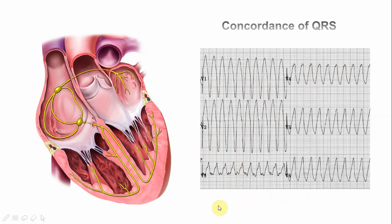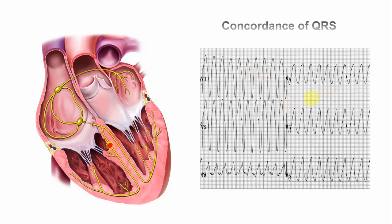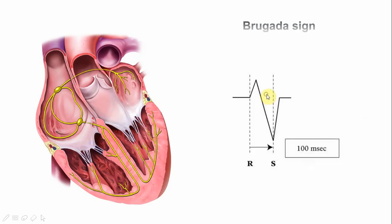Concordance is a very important concept. Concordance of the QRS complexes across the chest leads V1–V6 is very specific for VT. It can be positive concordance (all QRS complexes predominantly upward) or negative concordance (all predominantly downward), depending on where the cardiac impulse originates. Please don't confuse concordance of the QRS complex here with concordance of the ST segment discussed in left bundle branch block — those are completely different concepts.